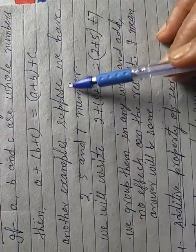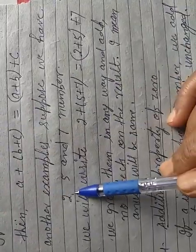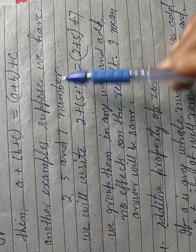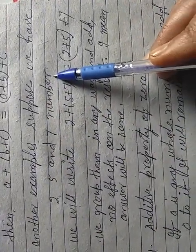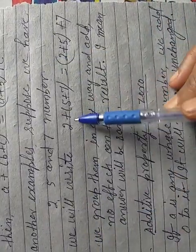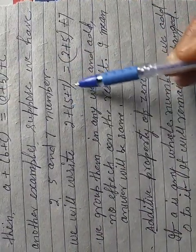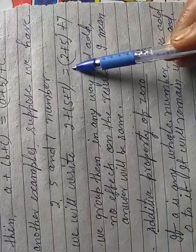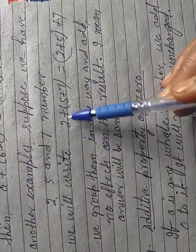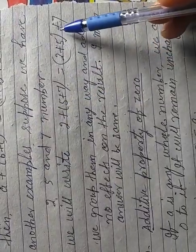Another example, suppose we have take three digits, 2, 5 and 7 numbers. How we have to write, dear students? In this way, we will be write 2 plus in the bracket 5 plus 7 is equal to 2 plus 5 in the bracket plus 7. If we solve this and this, no effect on the result.